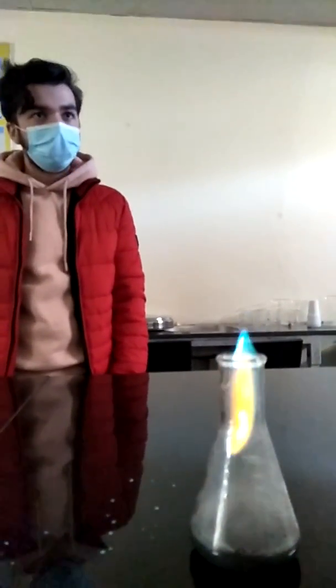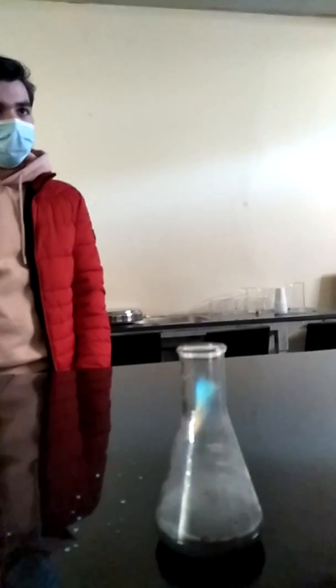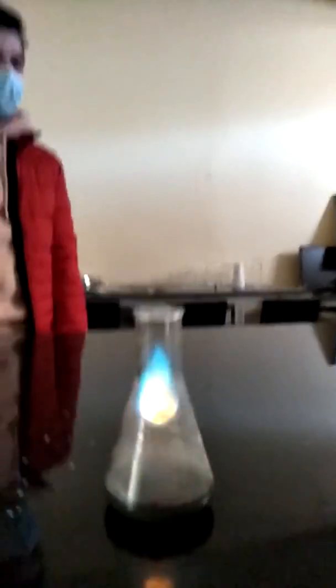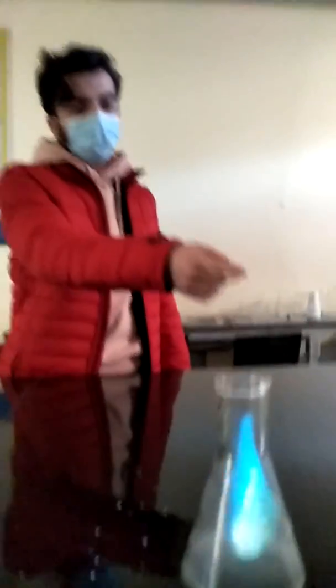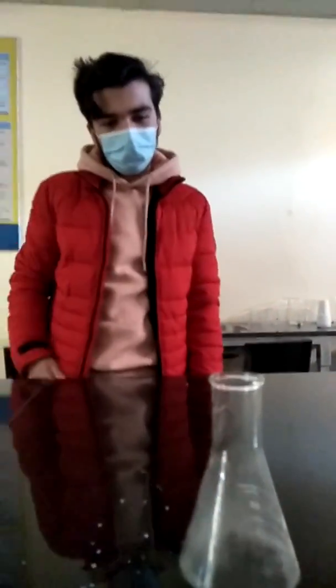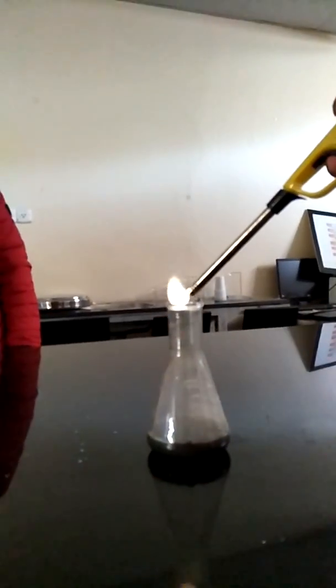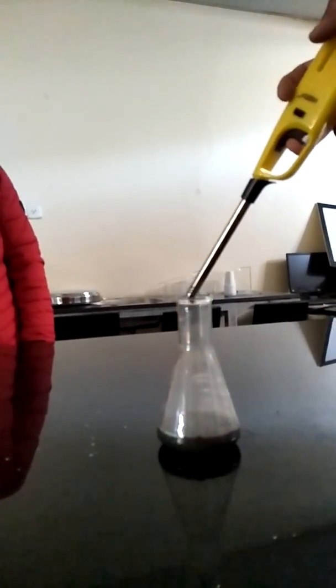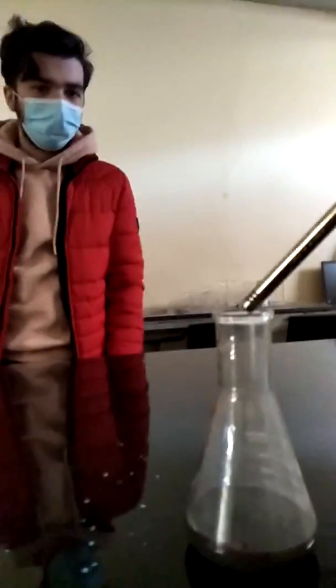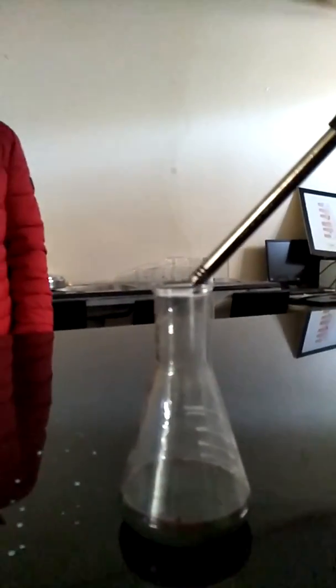You know what is the difference between these two? You used one beaker and the other one is a conical flask, right? So what is the difference? Why is this flame lasting longer? This gas is escaping faster because of the larger surface area. It will escape very fast. But in this case, the neck is narrow. Can it escape from it? Yeah, that's right.